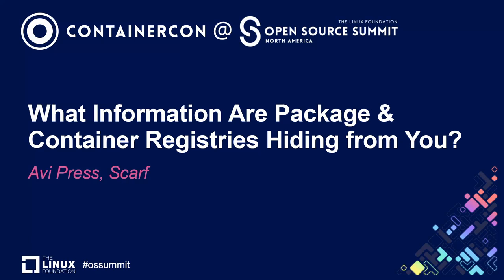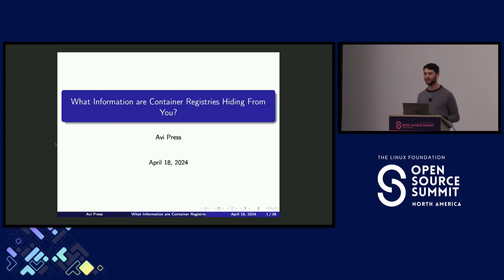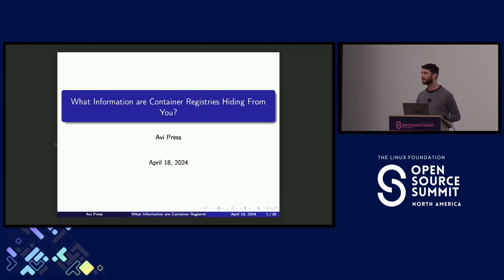We are right at two o'clock so I will get started here. Thanks everyone for joining us today. We are going to be talking about container registries, what kind of data they have access to and what data they are not sharing with you if you're distributing your containers on one of these registries. My name is Avi Press. I'm the founder and CEO of Scarf and we focus on providing better usage analytics for open source maintainers and open source projects.